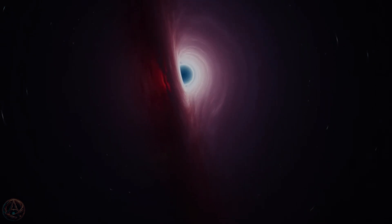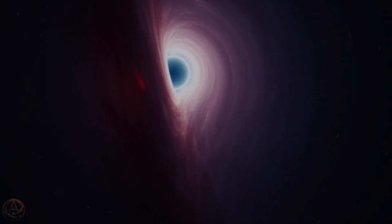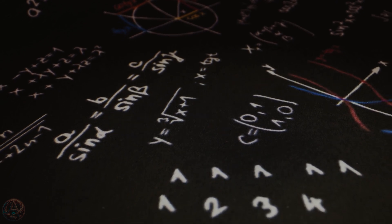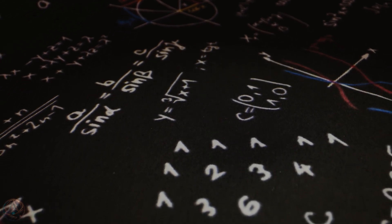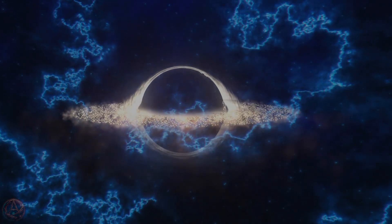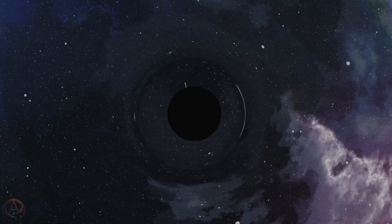And yet, what if that's not what actually happens? What if instead of dying you're transported somewhere else? To understand how a black hole could lead to another universe, we have to confront one of the strangest paradoxes in physics. The black hole information paradox. According to quantum mechanics, information, meaning the fundamental properties of matter and energy, can never be destroyed. But black holes seem to break this rule. When something falls into a black hole, it's supposed to be gone forever. No trace, no evidence it ever existed. This contradicts everything we know about physics. So, where does the information go?